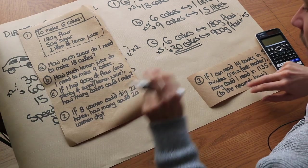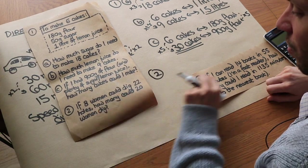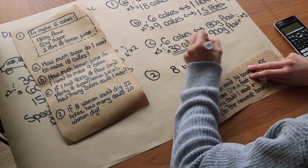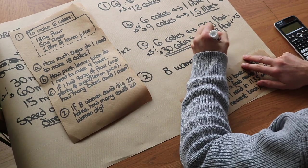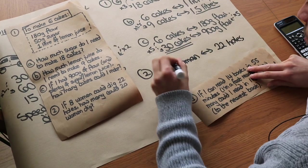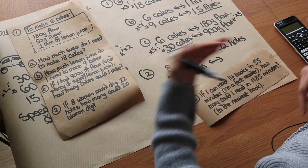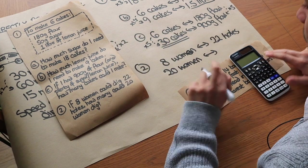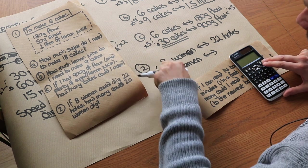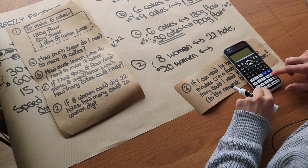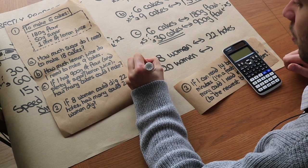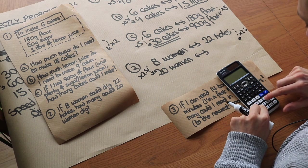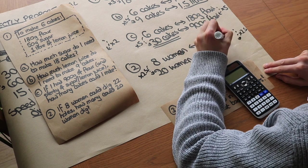What about the second question: if eight women could dig 22 holes, how many could 20 women dig? So let's write that information out: eight women - and I like to put an arrow in between to show that they're directly proportional - so they could dig 22 holes. How many could 20 women dig? Well, they are directly proportional because if we were to double the number of women, we'd expect them to be able to dig twice as many holes. So again, it's just a case of identifying that scale factor. We can do 20 divided by 8 to see how many times bigger that is, so 20 divided by 8 is 2.5. So it's 2.5 times bigger, which means they can dig 2.5 times more holes. So 22 times 2.5 is 55 holes.